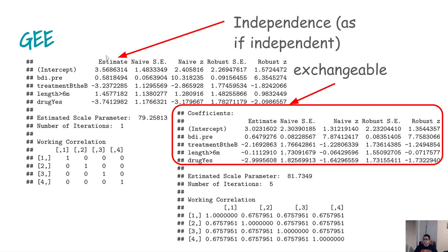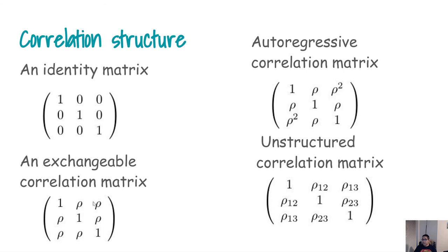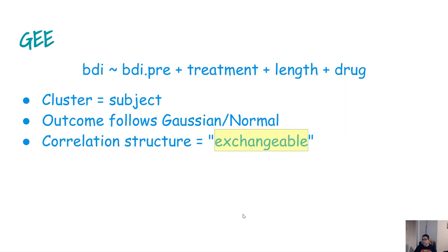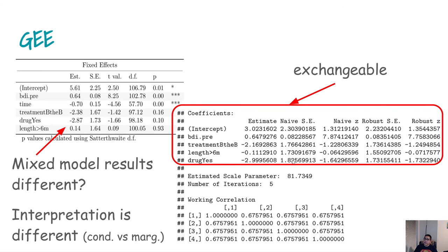In the R output, putting 'independence' or 'exchangeable' gives you two sets of estimates. In terms of point estimates they will be very similar, but the robust standard errors may differ slightly. You can also get the working correlation printout from R — the independence correlation and the exchangeable working correlation. For the exchangeable structure, you will see a value of 0.67 estimated by GEE, with everything else copying that parameter, since in an exchangeable matrix all off-diagonal correlations are the same.